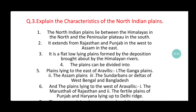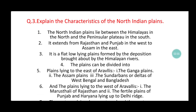Question 3: explain the characteristics of the North Indian Plains. The North Indian Plains lie between the Himalayas in the North and the Peninsular Plateau in the South. They extend from Rajasthan and Punjab in the West right up to Assam in the East. They are flat, low-lying plains formed by the deposition brought about by the Himalayan rivers. The plains can be divided into the Ganga Plain, Assam Plains, and the Sundarbans or the Deltas of West Bengal and Bangladesh.